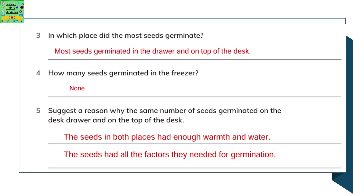Suggest a reason why the same number of seeds germinated in the desk drawer and on top of the desk. The seeds in both places had enough warmth and water — they had all the factors they needed for germination.